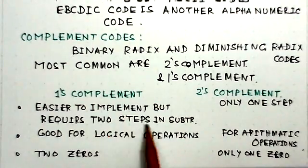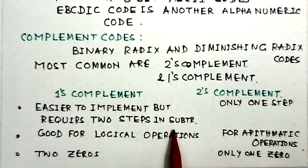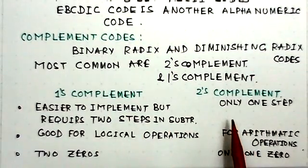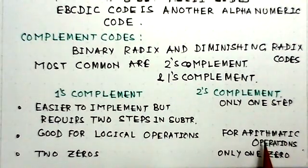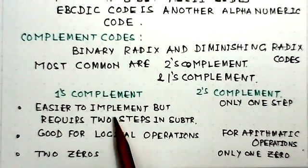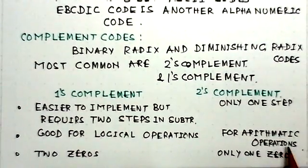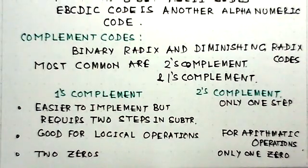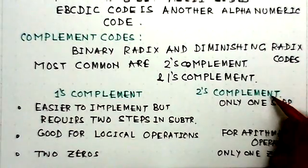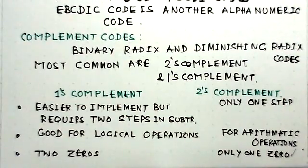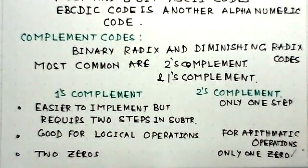Comparing one's and two's complement: one's complement is easier to implement — complement each bit — but requires two steps in subtraction because a carry must be added to the result. Two's complement requires only one arithmetic process and is ideal for arithmetic operations. One's complement is good for logical operations but has two representations of zero, whereas two's complement has only one zero. Therefore, two's complement is the most appropriate for adders, subtractors, multipliers, and dividers.